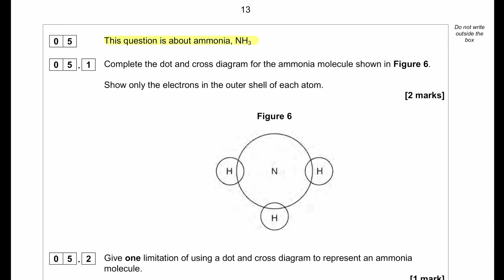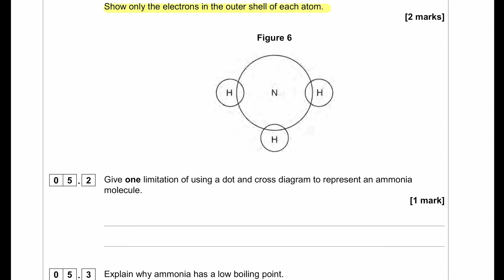This question is about ammonia. Complete the dot and cross diagram for the ammonia molecule shown in Figure 6 — show only the electrons in the outer shell of each atom. Ammonia contains nitrogen with 3 hydrogen atoms. If we represent the nitrogen with a dot and the hydrogen with a cross, nitrogen has 5 outer shell electrons where 3 electrons get shared between nitrogen and each hydrogen, which shares 1 electron.